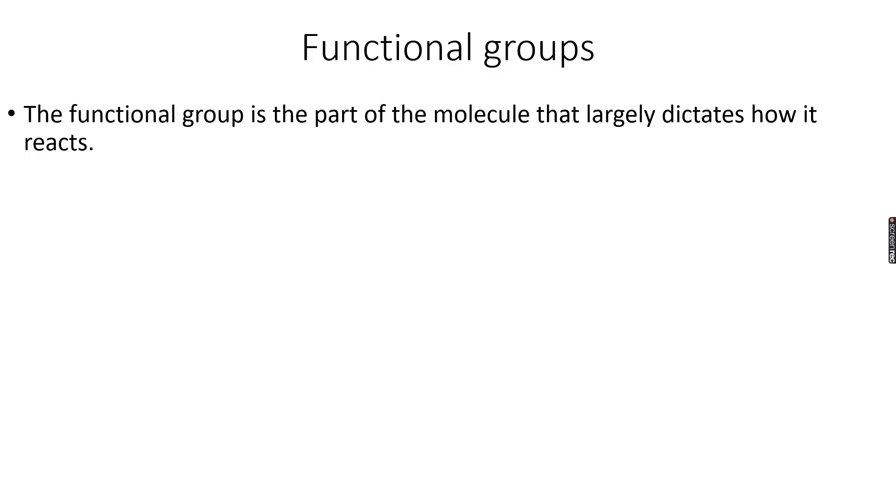Now the first thing we need to know are some definitions. The first definition is a functional group. A functional group is the part of a molecule that largely dictates how it reacts. That's why it's called the functional group, because it performs all the functions for that molecule, the reactions that take place with that molecule. It's because of that functional group. So the functional group is very important.